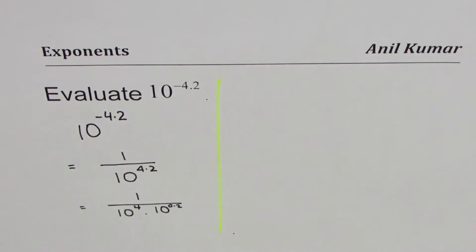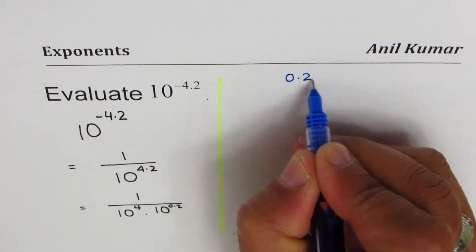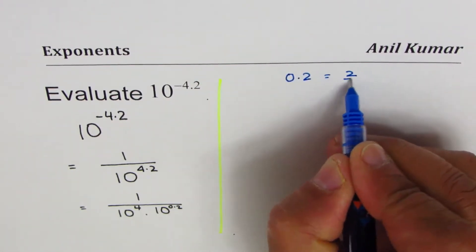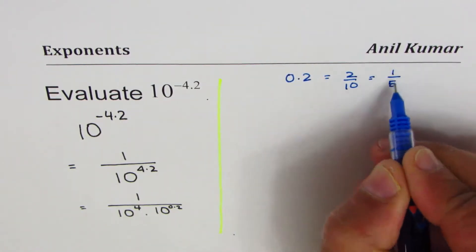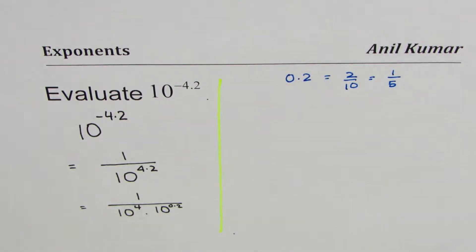I'm writing big and bold so that you can see the 0.2 part. Now what is 0.2? 0.2 is actually equal to 2 over 10, which could be simplified as 1 fifth.